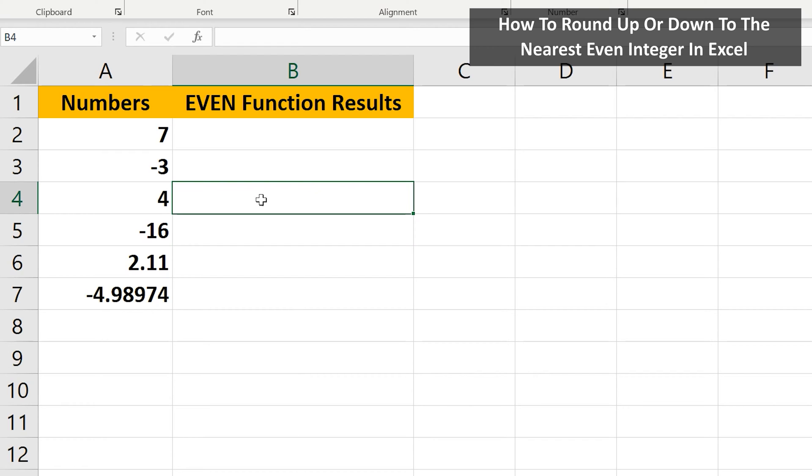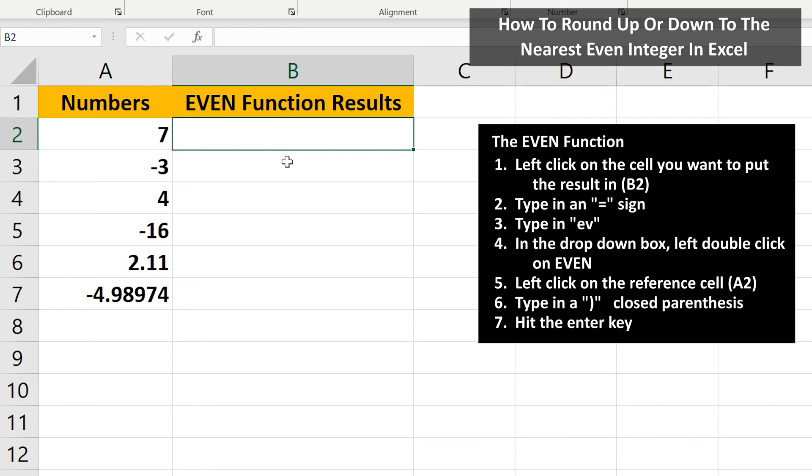I'm going to use the EVEN function referencing this cell, so I left-click on cell B2. Next, type in an equal sign, then type in the letters EV. Now, in the drop-down box, left double-click on the word EVEN.